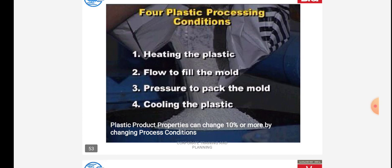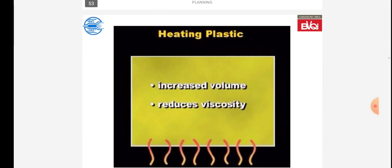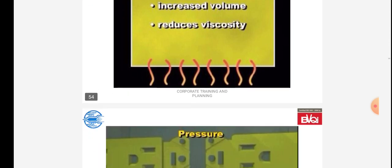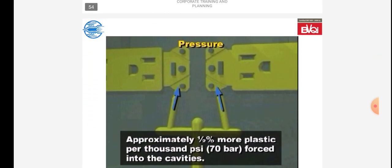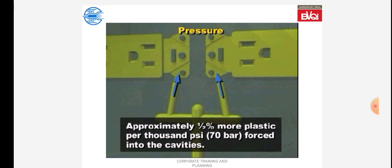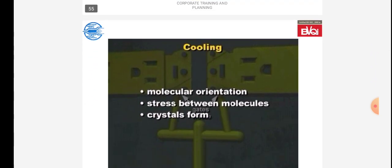Pressure to pack the mold and cooling the plastic: heating plastic increases volume and reduces viscosity. Pressure of approximately one half percent more plastic per thousand psi (70 bar) is forced into the cavities. During cooling, molecular orientation, stress between molecules, and crystal formation occur.